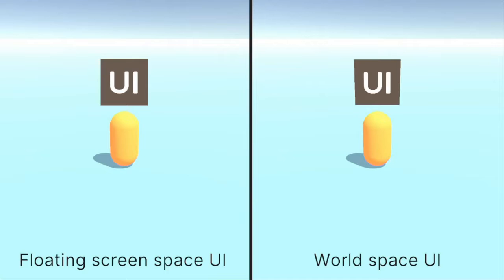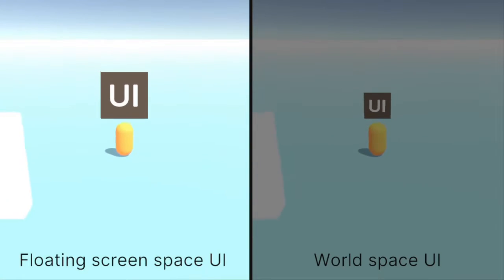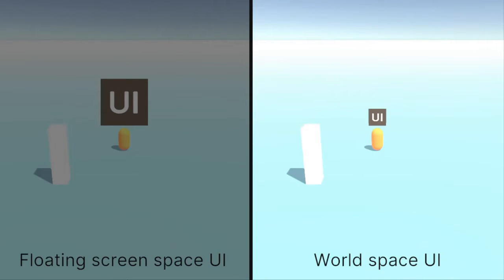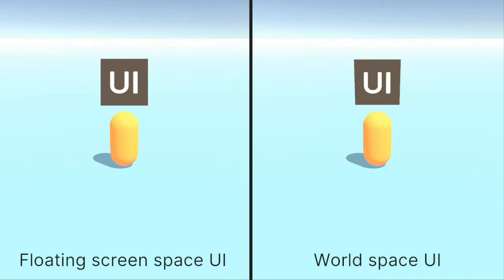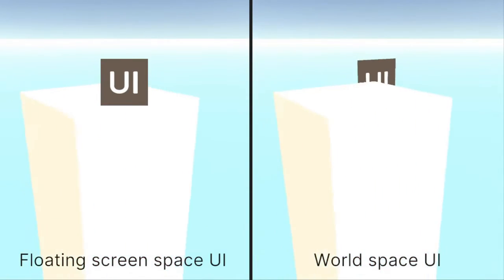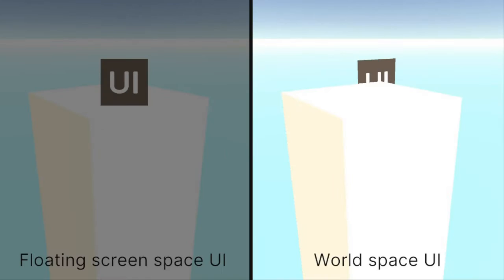Next, scaling with distance. FloatingScreenSpaceUI will by default keep its size regardless of the distance to the capsule. The WorldSpaceUI, on the other hand, will scale with distance. Next up, occlusion. I will rotate the camera until a block appears in front of the capsule. FloatingScreenSpaceUI will by default not be blocked by 3D geometry. WorldSpaceUI is part of the 3D scene and will be occluded by things in front of it.